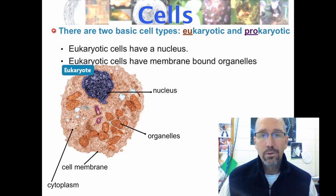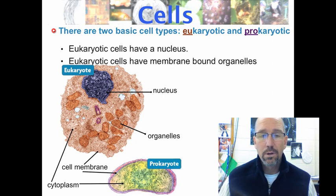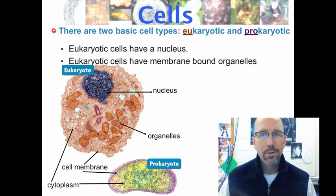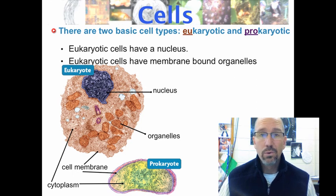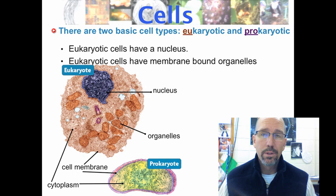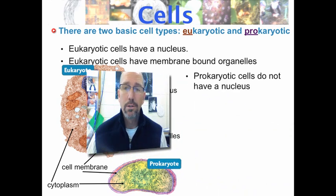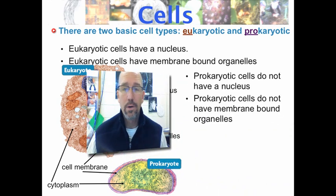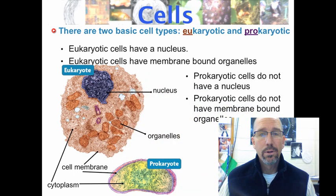Eukaryotic cells have a nucleus and membrane-bound organelles. Prokaryotic cells — back to bacteria — also have a cell membrane and cytoplasm, just like eukaryotic cells, but there's no nucleus. They have an area where the DNA is found, but they don't have a membrane-surrounded nucleus, and they don't have those membrane-bound organelles. So prokaryotic cells lack a nucleus and lack membrane-bound organelles.